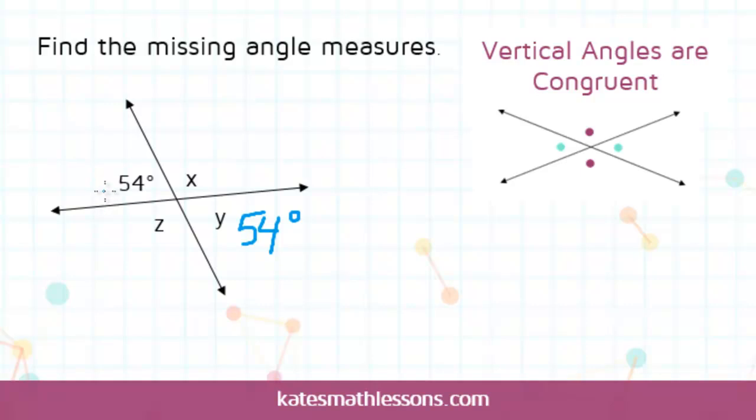So from this bottom of the 54 degree angle all the way over to here, this angle is 180 degrees. This part of it is 54. So to find this missing part right here, we can just do 180 minus 54. And that will tell us this missing part right here.